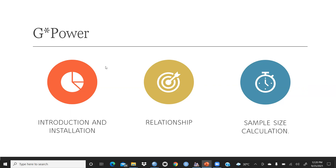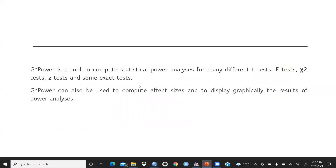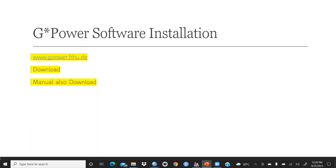First, let me give you an introduction to G*Power. G*Power is a tool to compute statistical power analysis for many different t-tests, F-tests, chi-square tests, z-tests, and some exact tests. G*Power can also be used to compute effect size and to display graphically the results of power analysis.